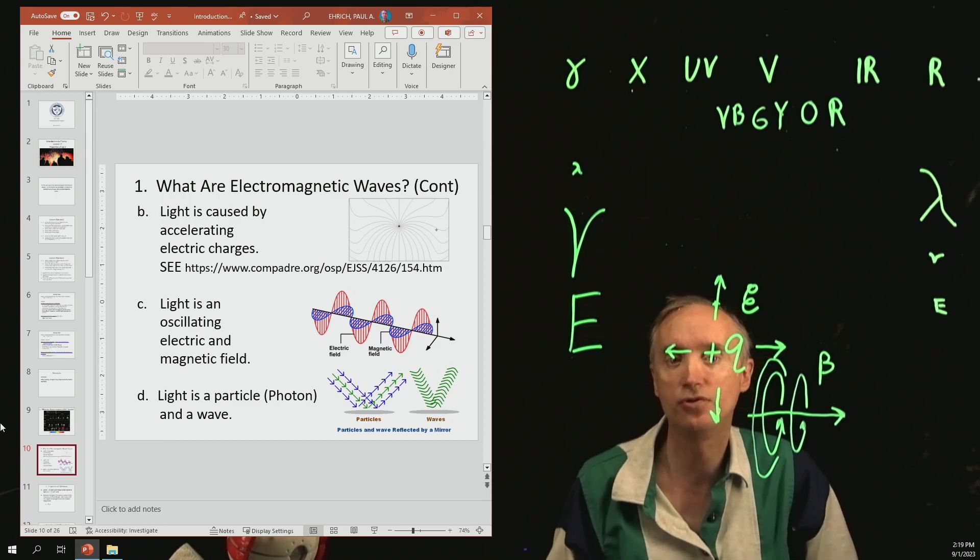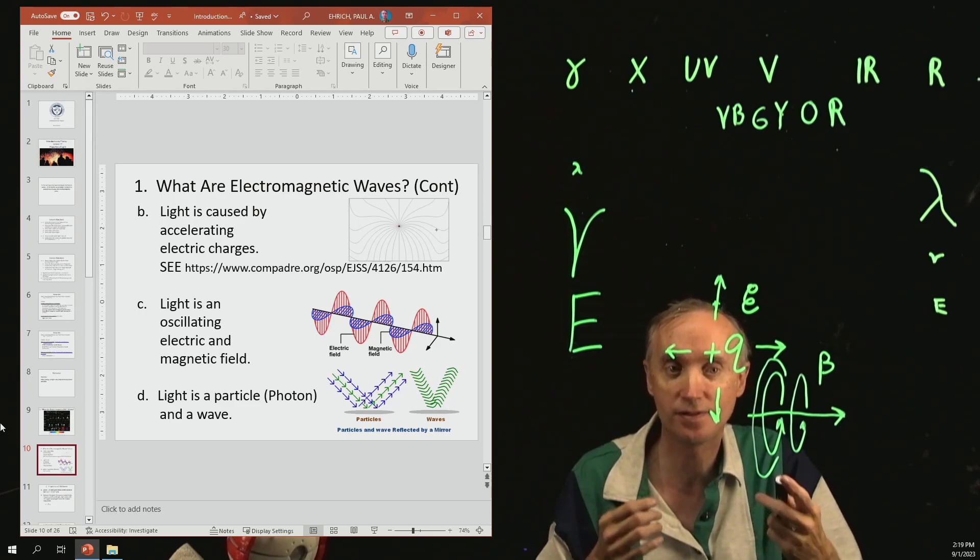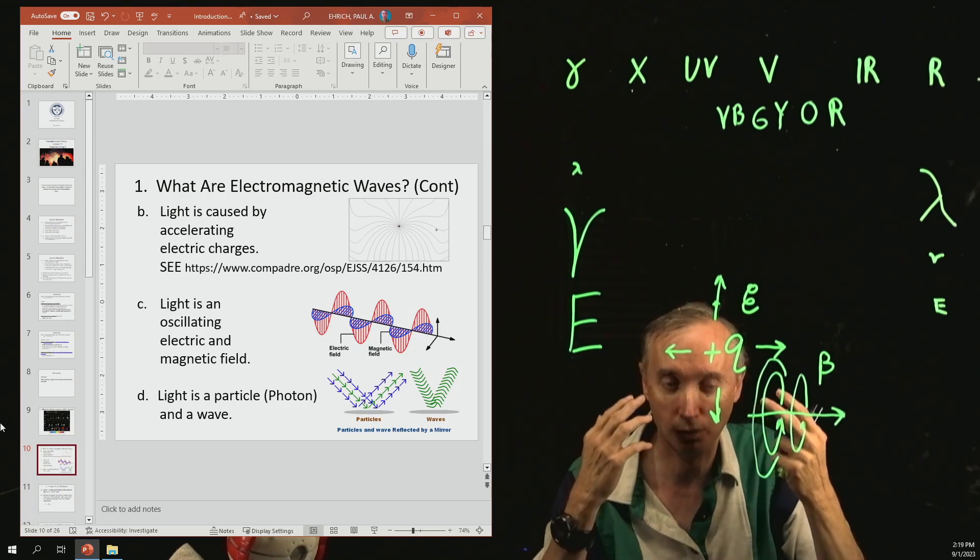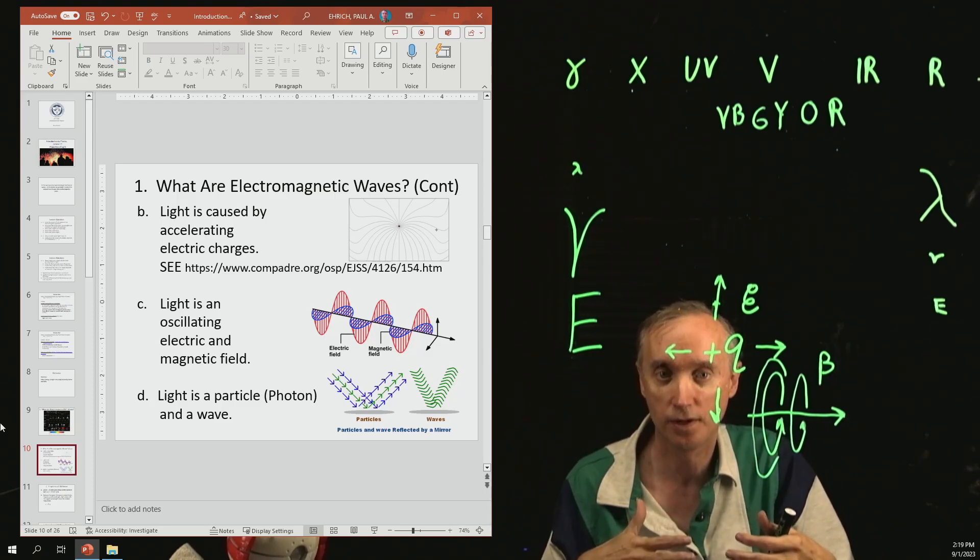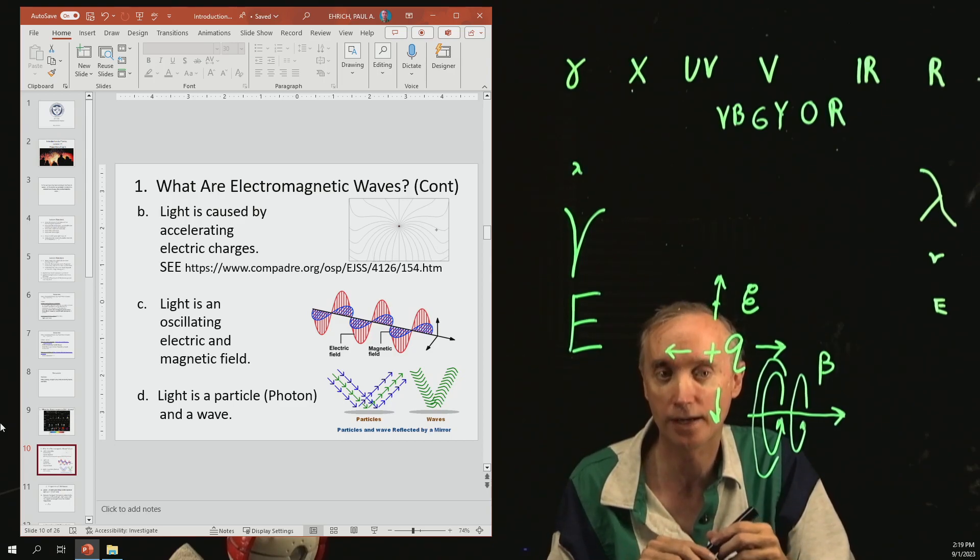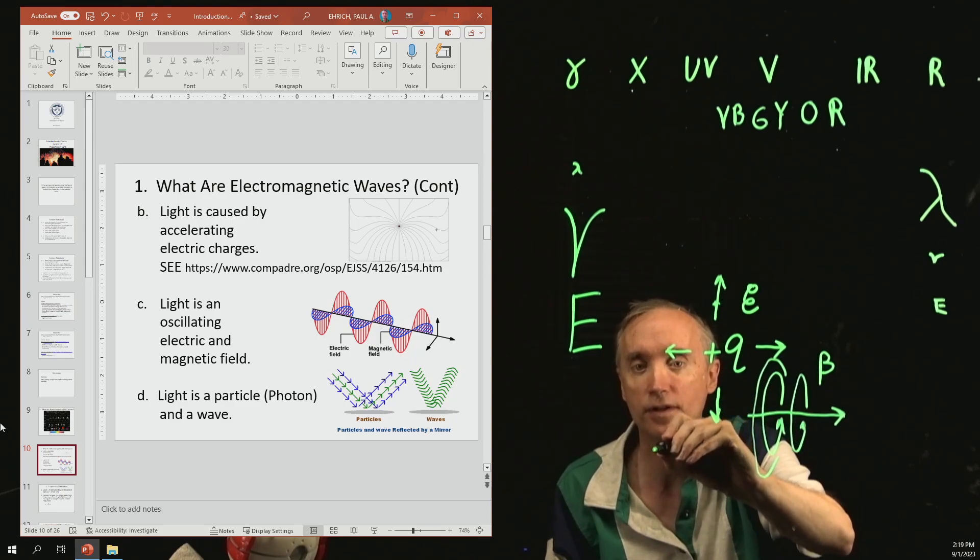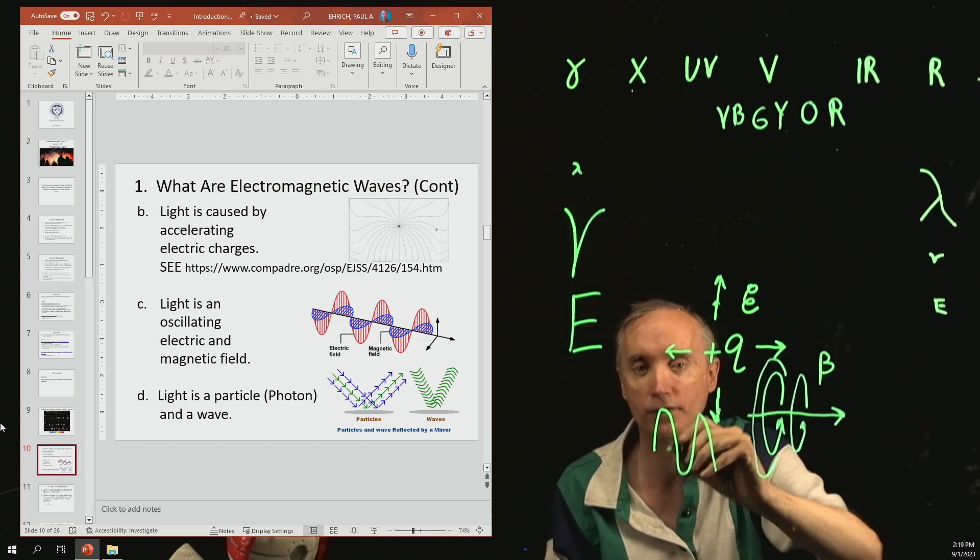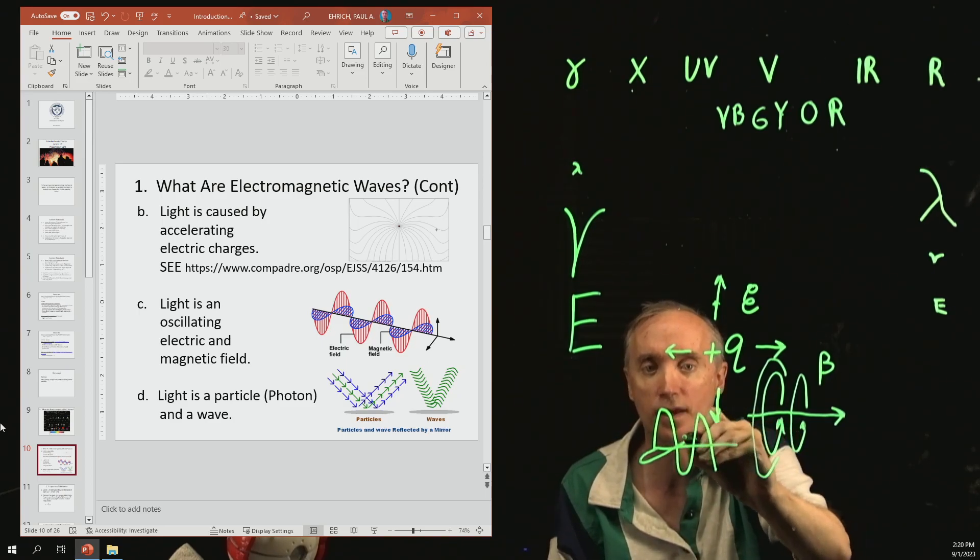The next thing is how do we visualize this? You cannot see this picture with your eyes. This is a representation of what light is. Light is an oscillating electric and magnetic field. You have the electric field in this particular picture going up and down like this. And then the magnetic field is going side to side, going behind this, and then coming back out, and then going behind this like that.